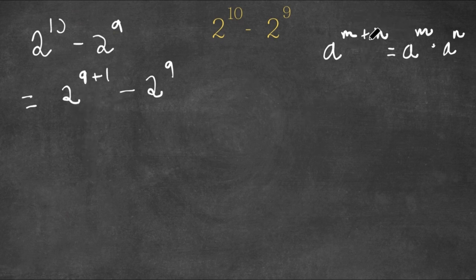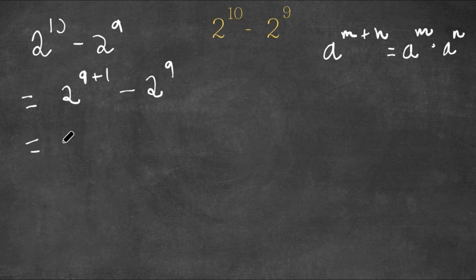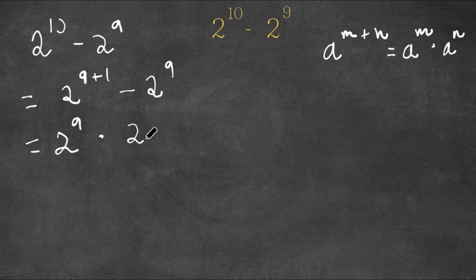I'm going to use this property for 2 to the power of 9 plus 1. We can think of 2 as a, 9 as m, and 1 as n. So this equals 2 to the power of 9 times 2 to the power of 1, and now we are subtracting this with 2 to the power of 9.